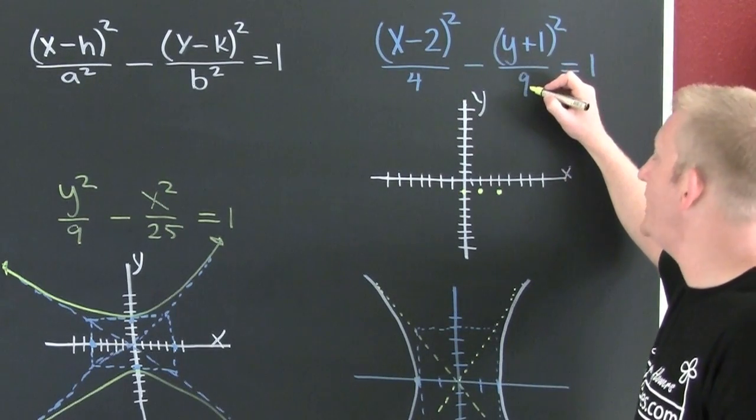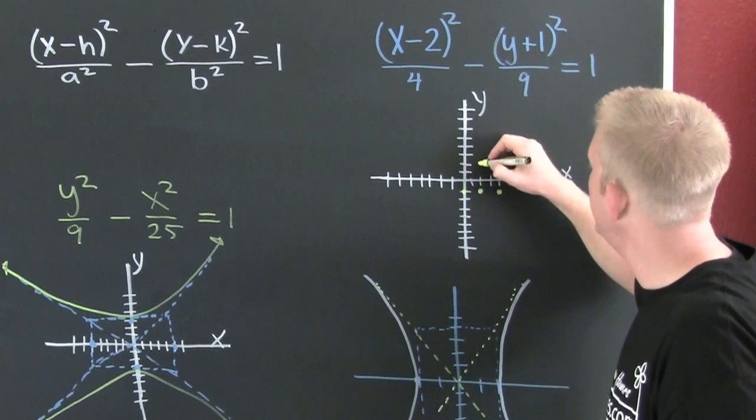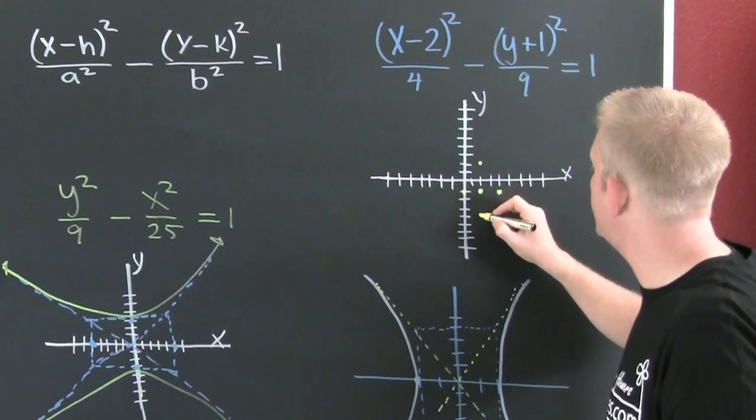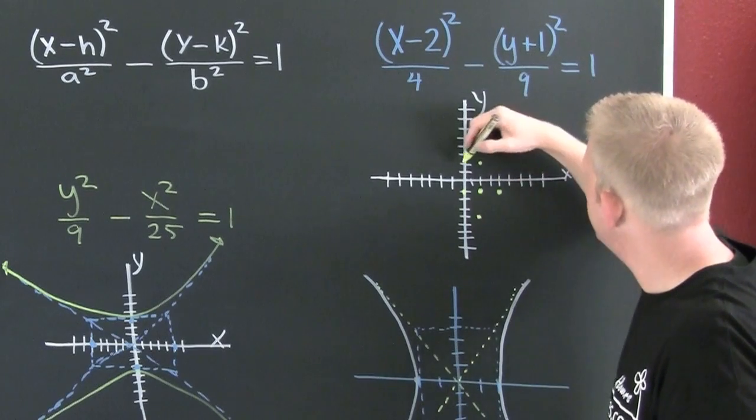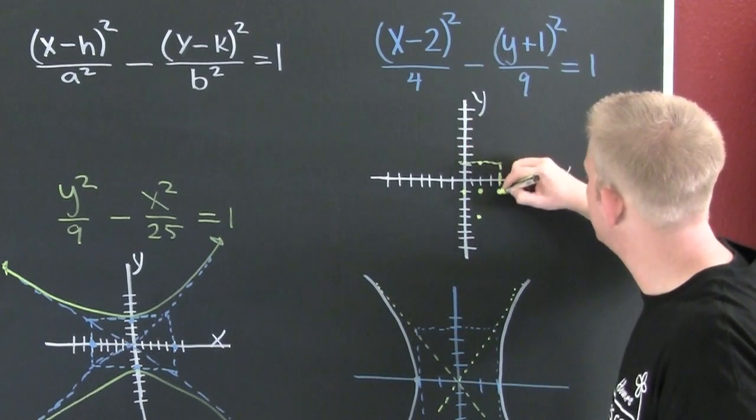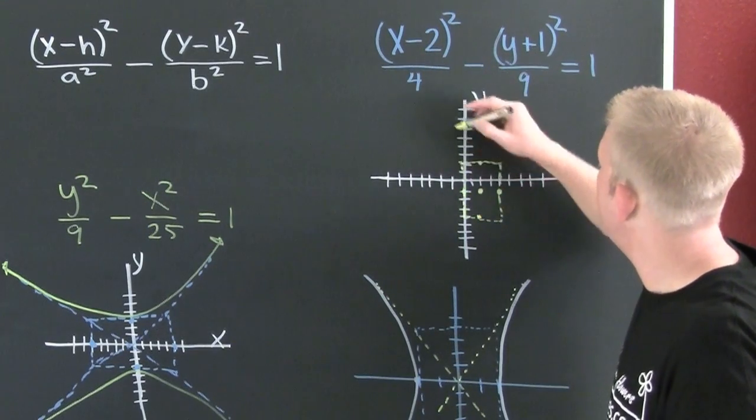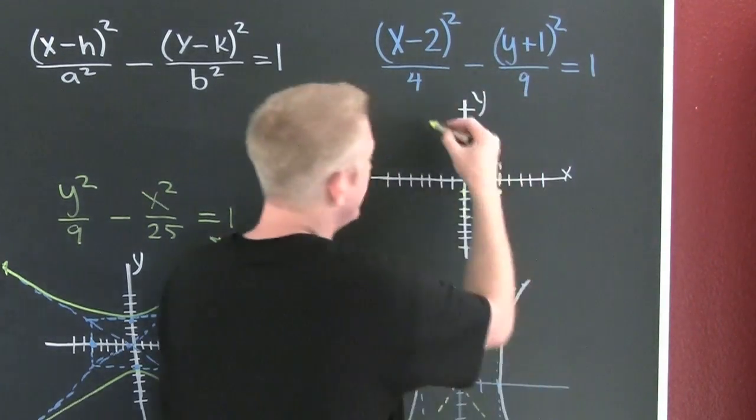This is one, two, three and one, two, three. So now we make a box, then we connect the diagonals of this box.